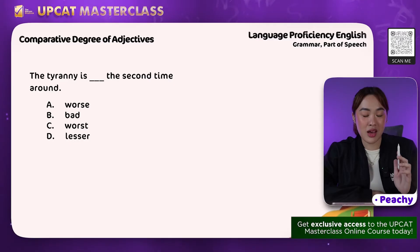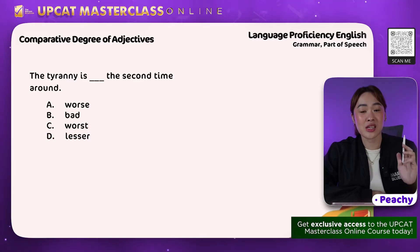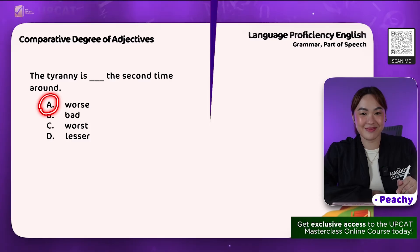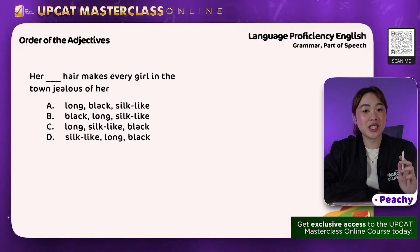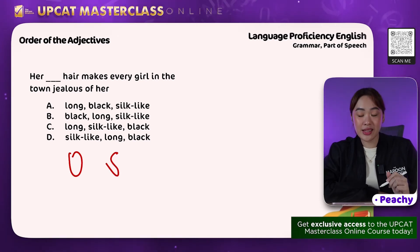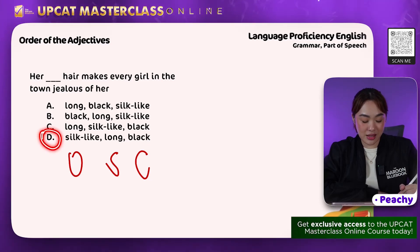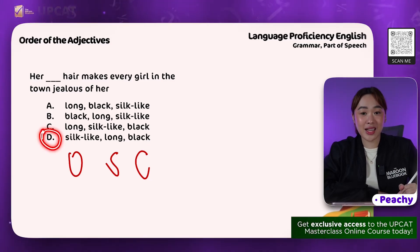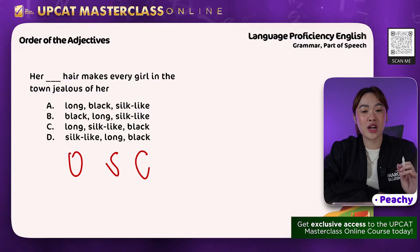A common mistake is that students might answer C, which is 'worst,' but that is the superlative adjective — so the correct answer is A. Next item — again, order of adjectives using the acronym DQOSASCOM. Here we have three adjectives: silk-like, which is an opinion; long, which is the size; and black, which is the color. Following the acronym, the correct answer is D — her silk-like, long, black hair makes every girl in the town jealous of her. Tip: remember at least three to four letters from the acronym.